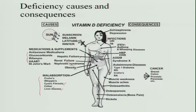When deficiency occurs, consequences appear in the brain — it causes schizophrenia and depression. There may be lung infections causing upper respiratory tract infection, tuberculosis, asthma, and wheezing. Cardiovascular function may be affected, with high blood pressure and coronary heart disease. In the pancreas, syndrome X and diabetes mellitus may develop. It may also lead to autoimmune diseases like type 1 diabetes and Crohn's disease. Muscle weakness, muscle aches, osteoarthritis, osteoporosis, osteomalacia, and rickets are all consequences of vitamin D deficiency.